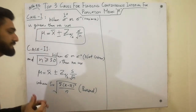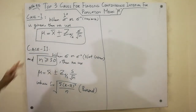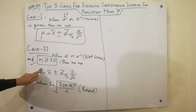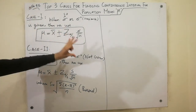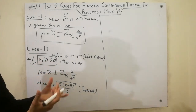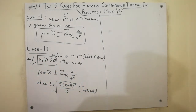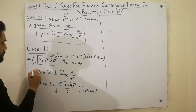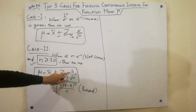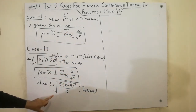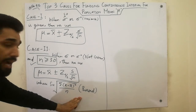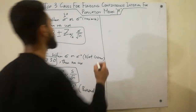This is biased, meaning it contains error. So in the second case, when Sigma squared is not given, you use s in place of Sigma. The formula becomes X bar plus minus Z alpha by 2, times s over root n. Here s is calculated as the square root of the sum of (x minus x bar) squared divided by n. This is the formula for the biased standard deviation.